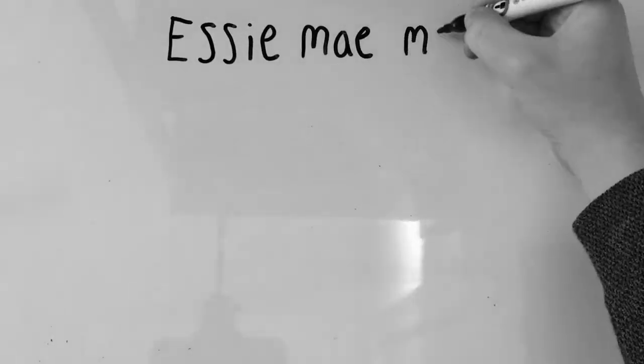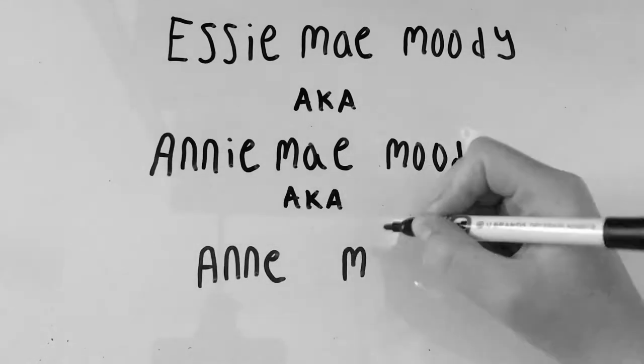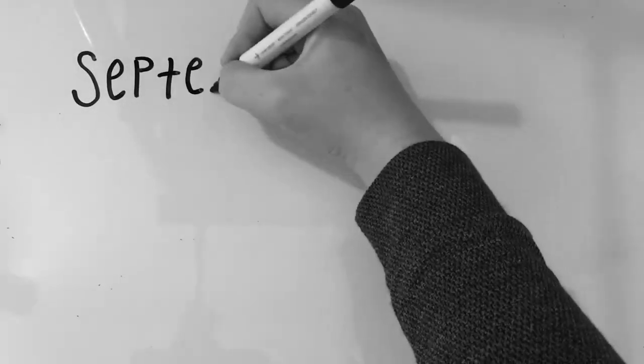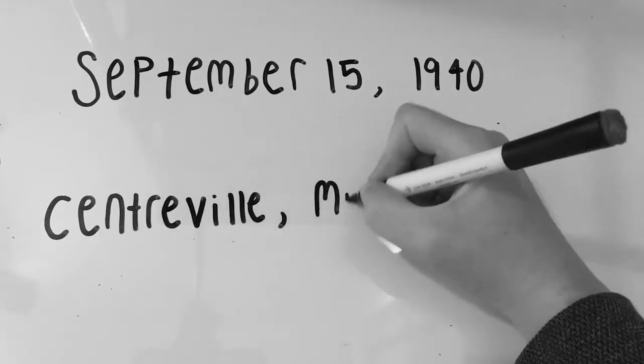My name is Essie Mae Moody, also known as Annie Mae Moody, or Ann Moody. I was born on September 15, 1940. I spent most of my childhood in Centerville, Mississippi.